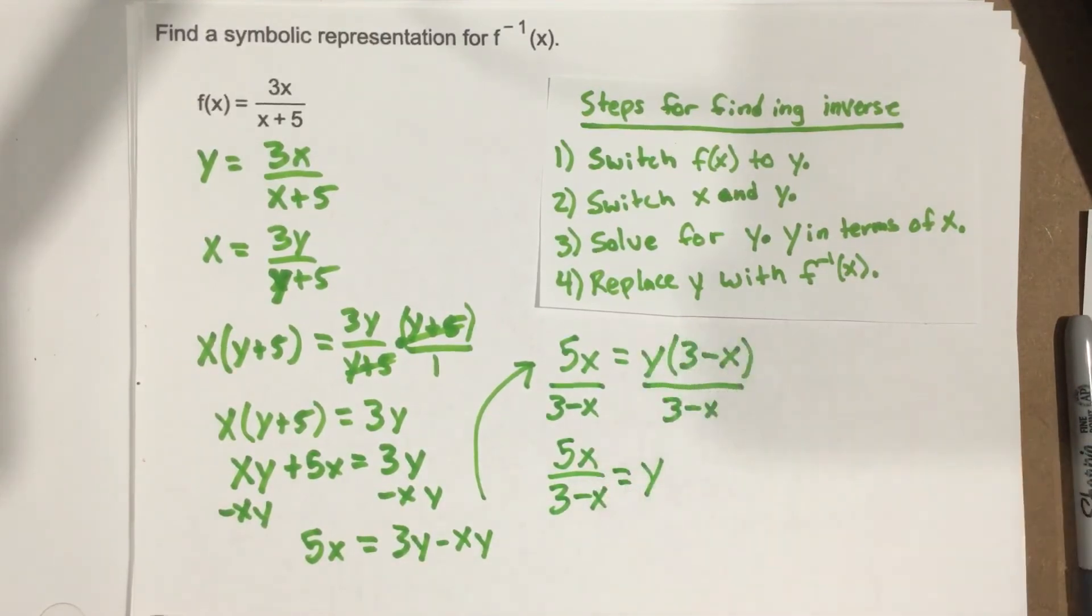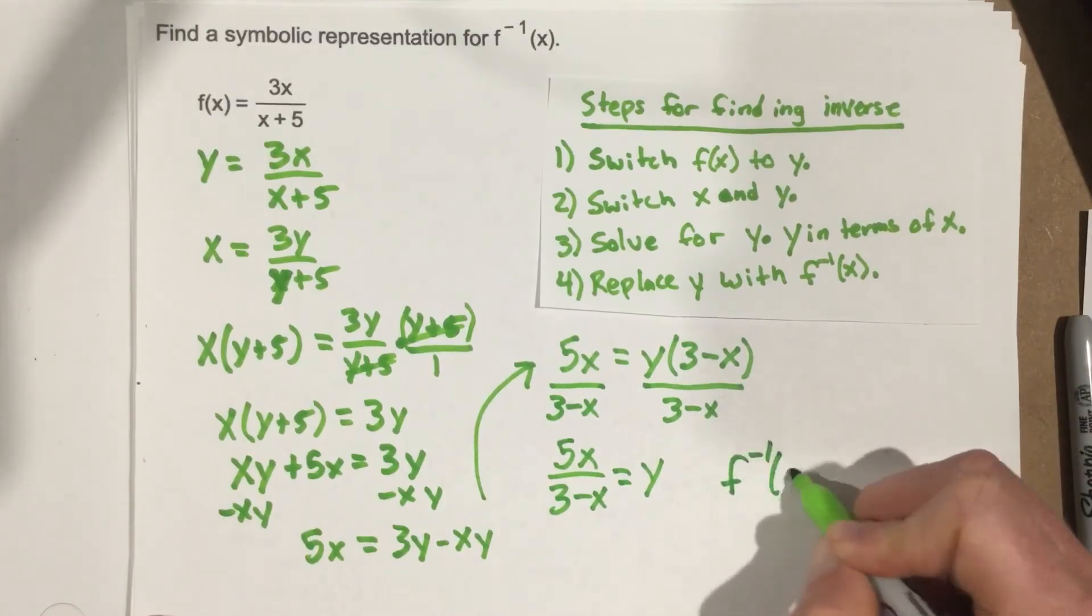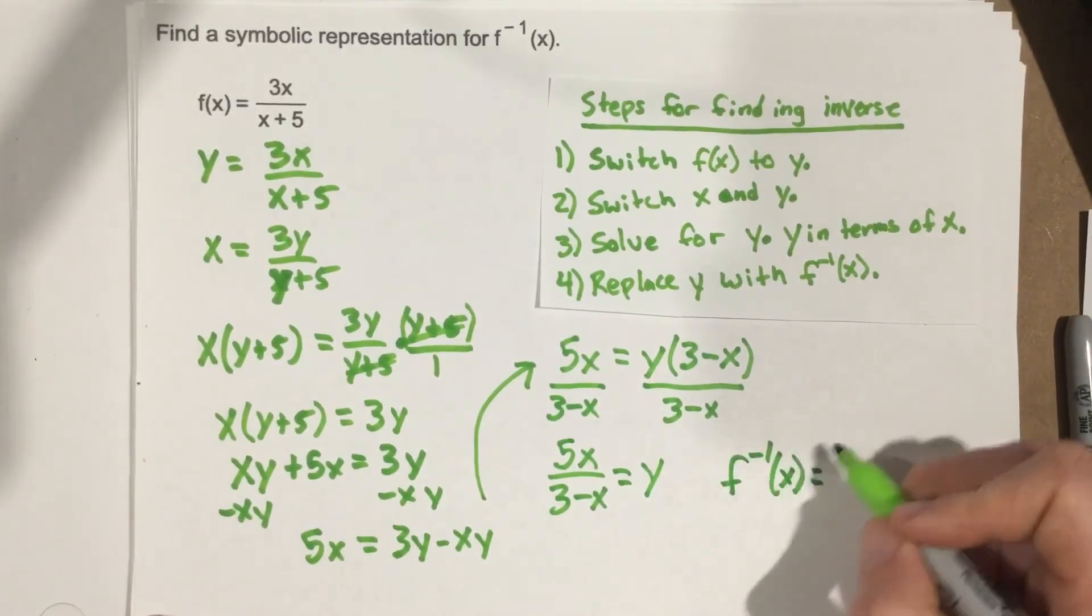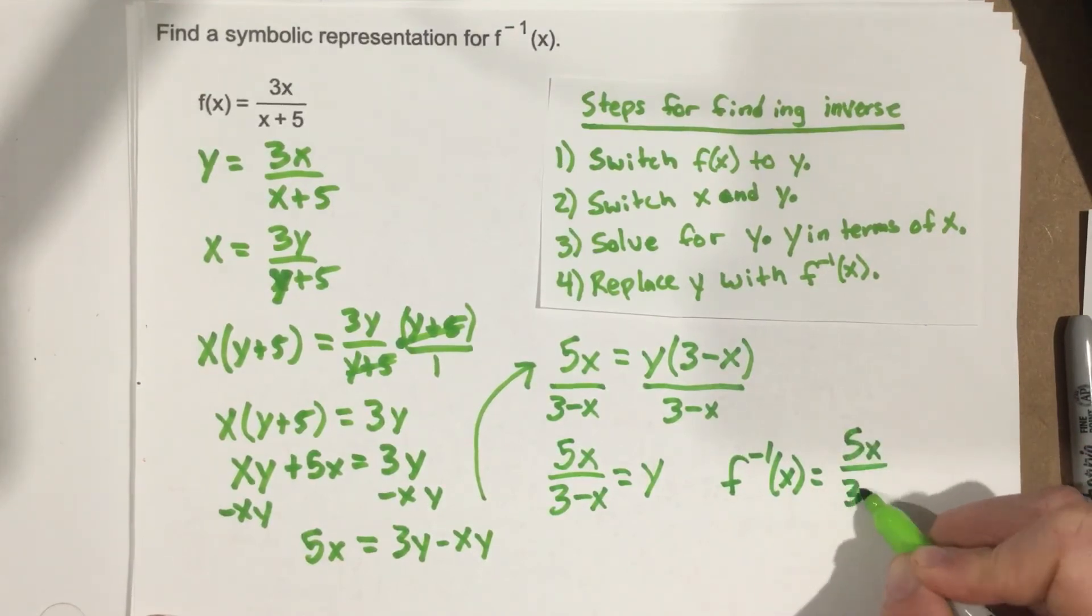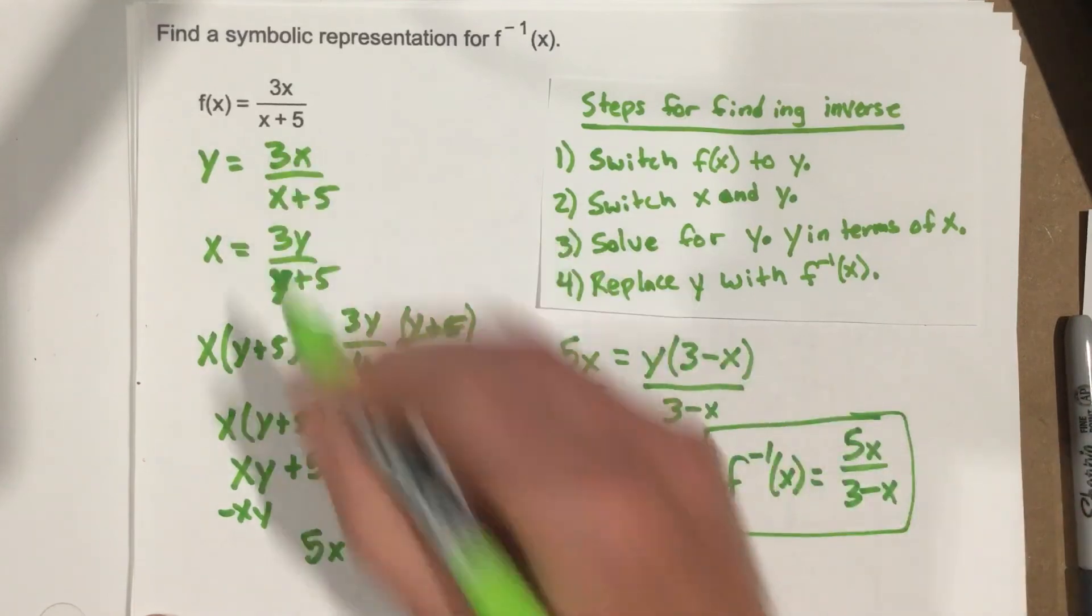Now I just need to replace y with f inverse. So I'm going to write f inverse of x equals 5x over 3 minus x. And that's the inverse for our original function.